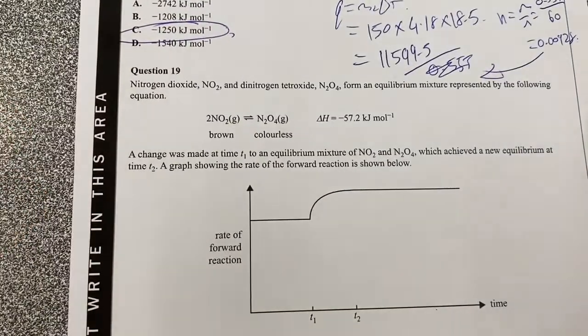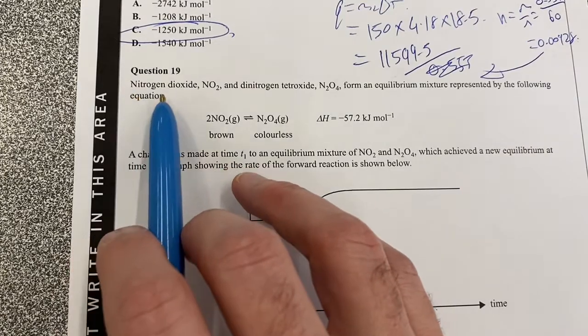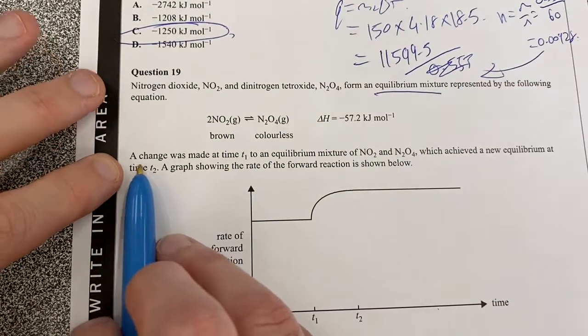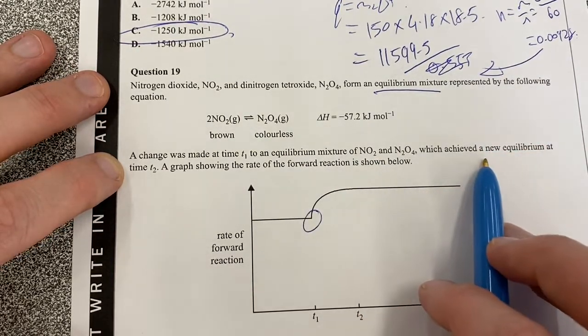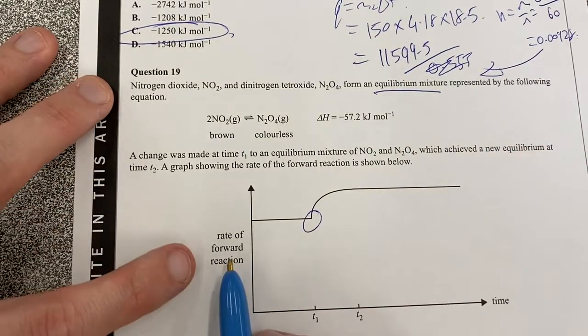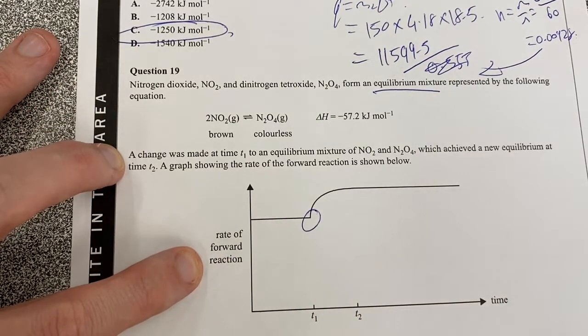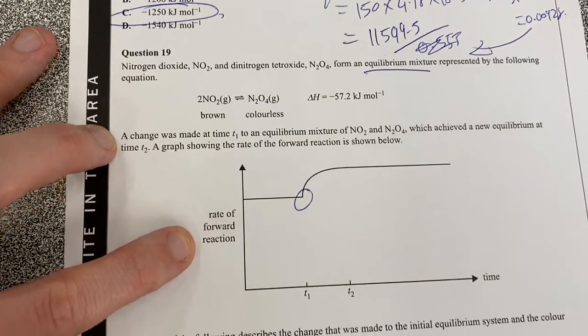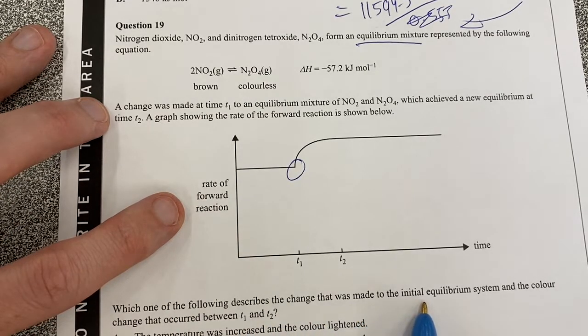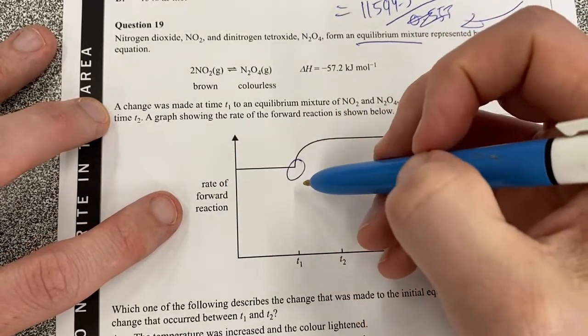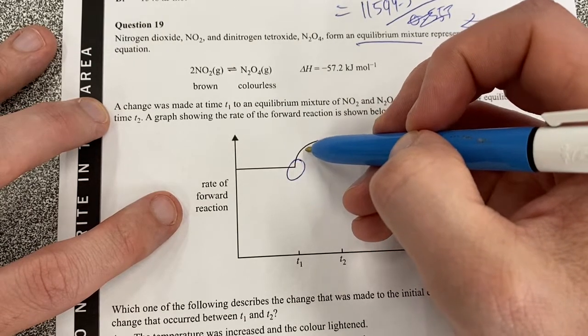Question 19, I've got nitrogen dioxide, and that's an equilibrium mixture, let's just go with that. A change was made at T2, and what happened? We got a new equilibrium. This is looking at the rate of the forward reaction. Okay, so what may have occurred here? Which of the following describes the change that was made to the initial equilibrium system and the colour change that occurred between T1 and T2? So all I know is that my forward reaction started to slowly increase.